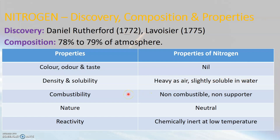Nitrogen is a gas which does not burn by itself and does not support the process of burning. So we say that nitrogen is a non-combustible gas and a non-supporter of combustion. In addition to that, nitrogen gas is neutral in nature, which means it is neither acidic nor basic. In terms of reactivity, nitrogen is a chemically inert gas, which means it is unreactive — unlike oxygen, which is very reactive. Nitrogen is chemically unreactive, especially at low temperature.